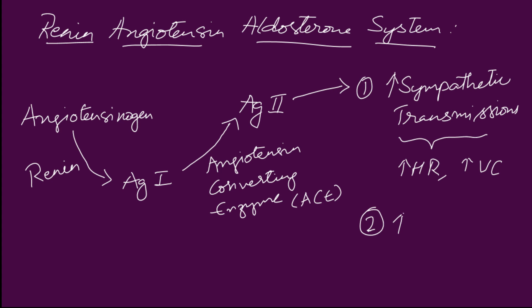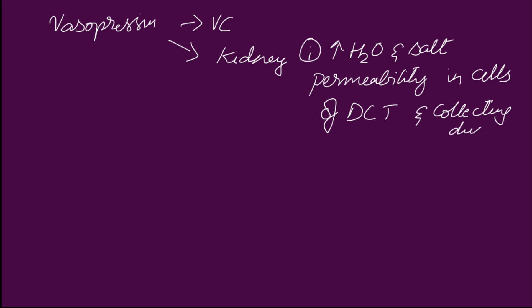Angiotensin 2 promotes the synthesis of vasopressin, also known as antidiuretic hormone. Vasopressin acts on the kidney, increasing water and salt permeability in the cells of the distal convoluted tubule and collecting duct. This causes reabsorption of salt and water into the blood, increasing blood volume.